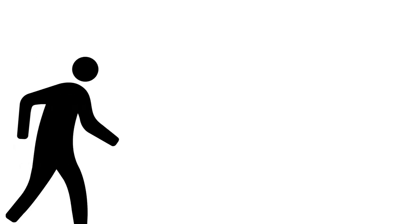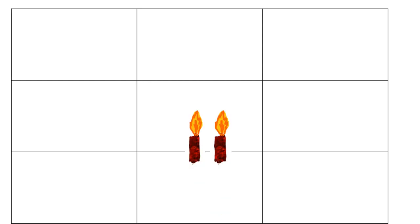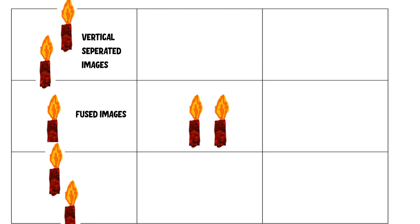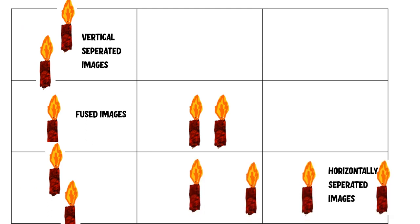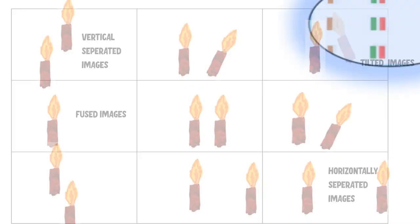Suppose a patient walks into your clinic. This patient is shown an object and you notice that the patient actually sees the images as two — this is called double vision. When you carry out diplopia charting, you might see variable results. In one gaze you might have two visions, in one position fused images, in others vertical or horizontal separation between images, or one image may appear tilted.